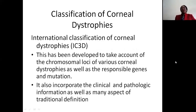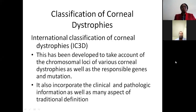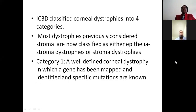Let's look at the classification of corneal dystrophies. We have the International Classification of Corneal Dystrophies, the IC3D. This has been developed to take account of the chromosomal loci of various corneal dystrophies, as well as the possible genes and mutations. It also incorporates clinical and pathologic information, as well as many aspects of traditional definition. The IC3D classifies corneal dystrophies into four categories. Most dystrophies previously considered stromal are now classified as either epithelial-stromal dystrophies or stromal dystrophies.